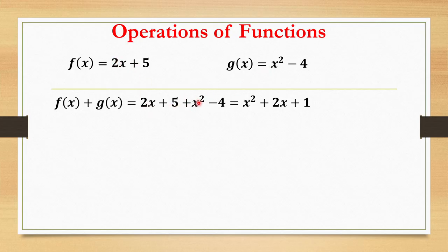So this is x squared plus 2x, 5 minus 4 is equal to positive 1. So this will be our final answer: x squared plus 2x plus 1.